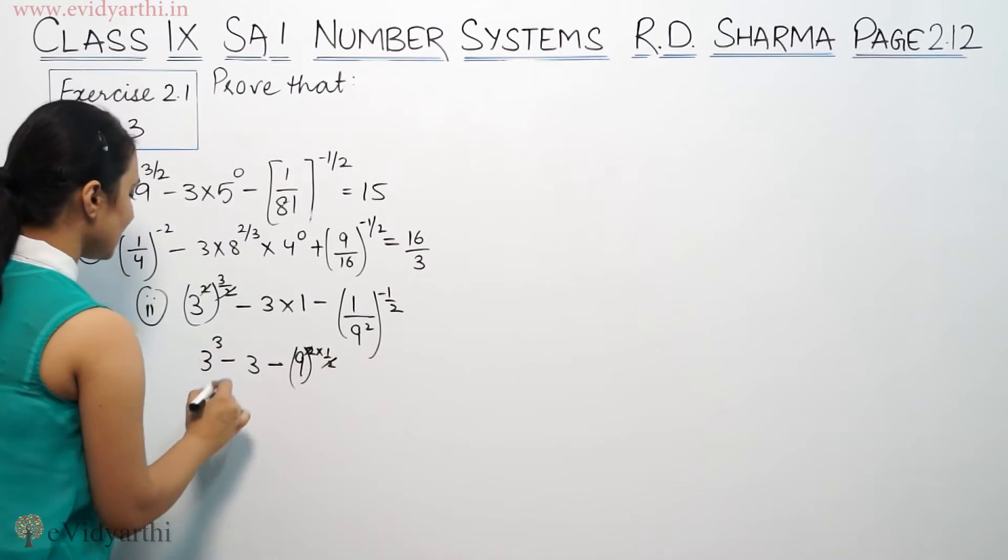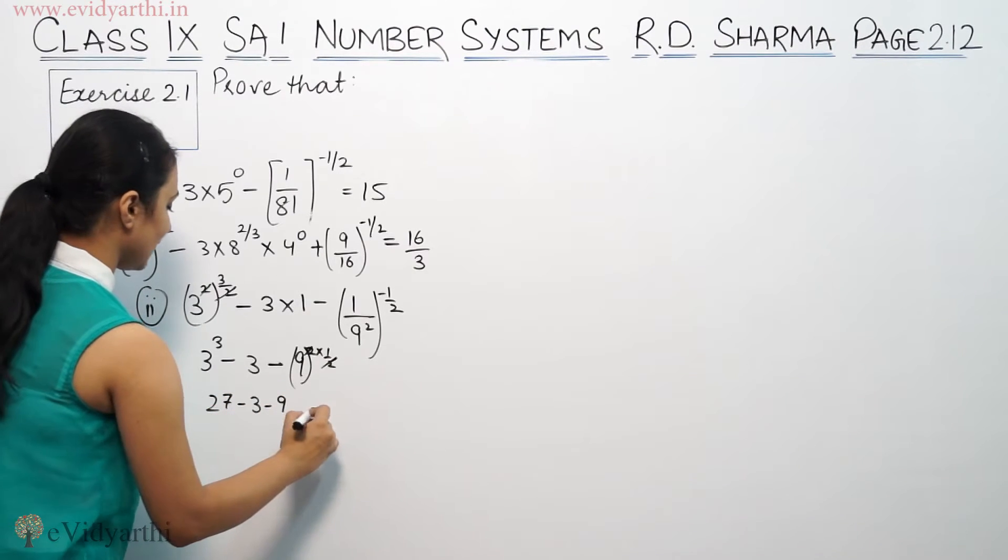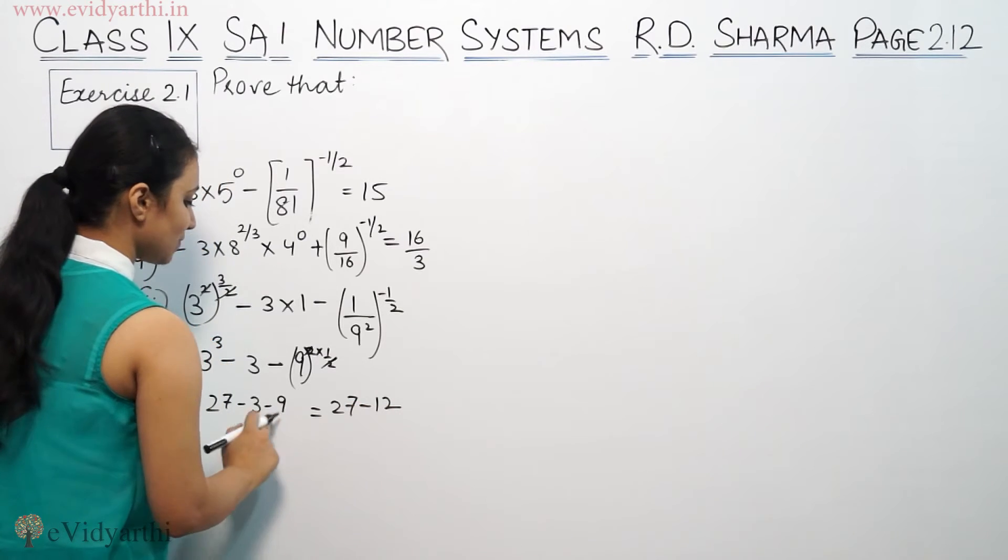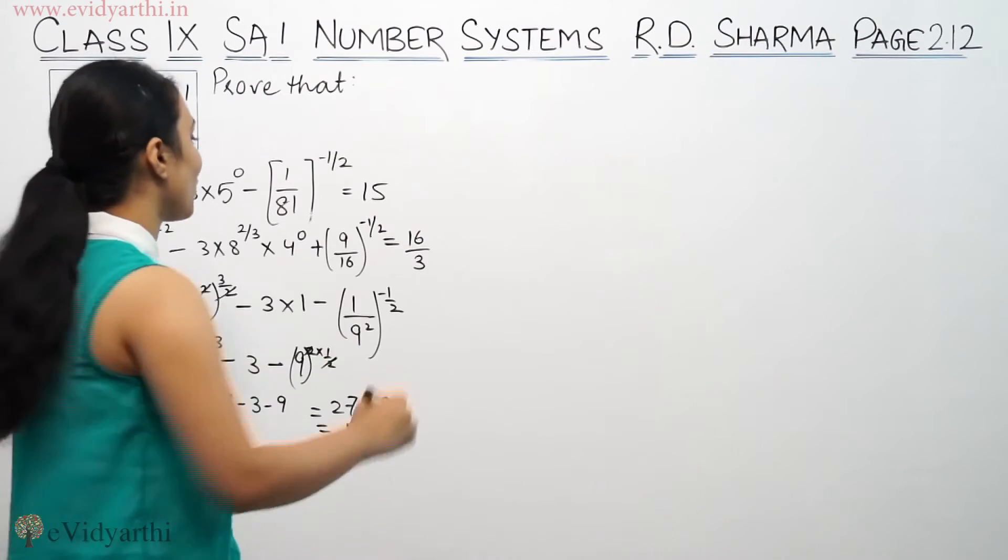So, we have 2 to cancel. 3 cube is 27 minus 3 minus 9. At least 27 minus 12, because 9 minus minus is plus. This is 15. We have to prove it.